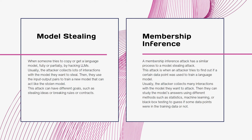We also have two more types of attacks targeting the intellectual property and privacy of LLMs: model-stealing attacks and membership-inference attacks. A model-stealing attack aims to copy or replicate a target LLM, fully or partially. Usually the attacker collects lots of interactions with the model they want to steal, then uses the input-output pairs to train a new model that acts like the stolen model. This attack can have different goals, such as stealing ideas, breaking rules, or contracts. For example, an attacker could steal a stock market prediction model or a spam filtering model.